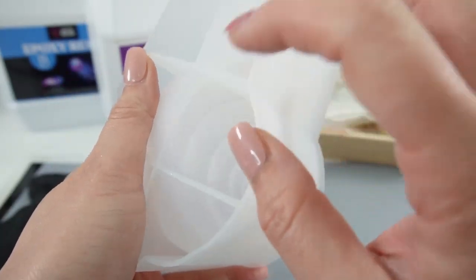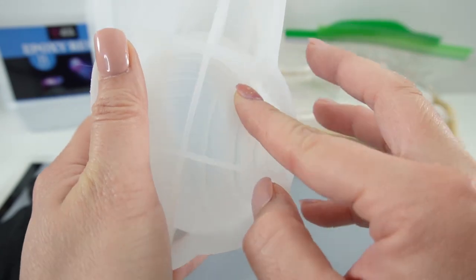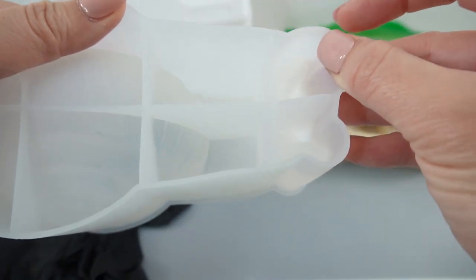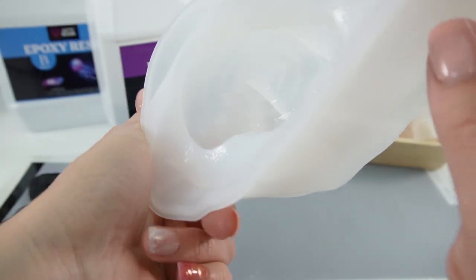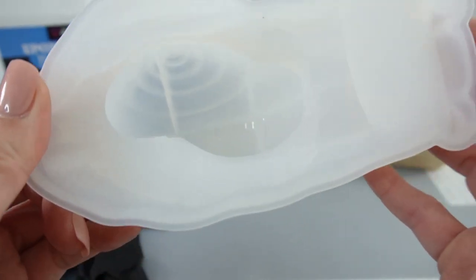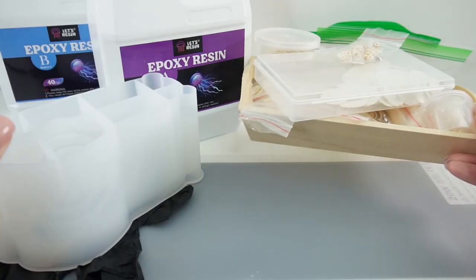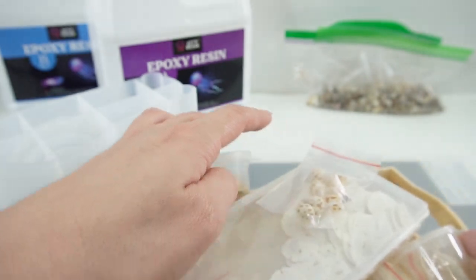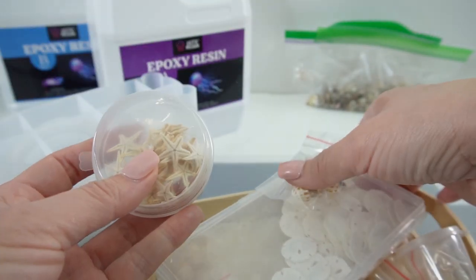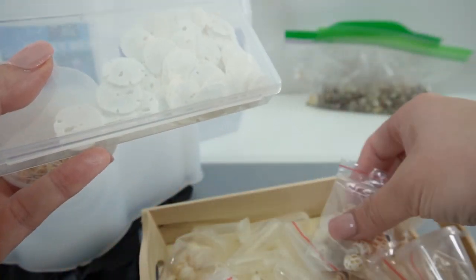As you can see there's actually a lot of details on here. Look at the little ridges here on the shell, we have little antennas, and I think it's going to turn out really amazing. I'm going to make it ocean themed, so here I have a bunch of my seashells, I have some starfish, some sand dollars.